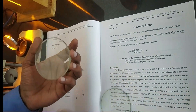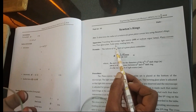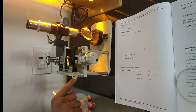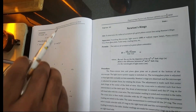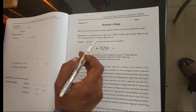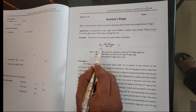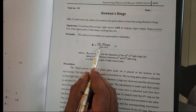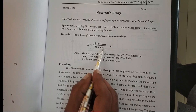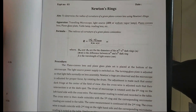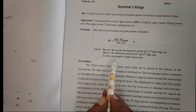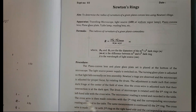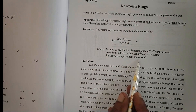Next, a plane glass plate. Next, a table lamp — if needed we can use it to read the micrometer readings. To determine the radius of curvature we use the formula: R = (D²m − D²n) / (4(m − n)λ), where R is the radius of curvature, D is the diameter of the corresponding m-th or n-th dark ring, (m − n) is the difference between the rings, and λ is the wavelength of the light source.